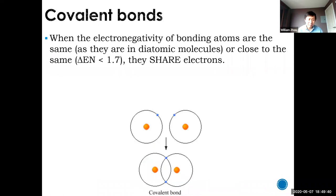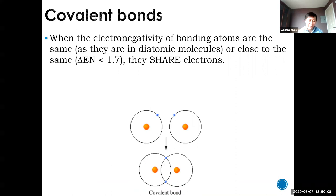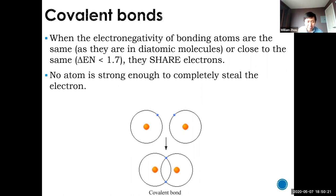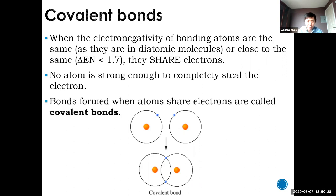With a covalent bond, no one is winning — no one takes those electrons — so the electronegativity difference is small. There's still a difference, but it's not enough for one side to win this tug of war. In grade 10 we teach covalent bonds as 'sharing and caring,' but really, what atoms are trying to do is take electrons from each other — they're just not strong enough. So they're stuck in this tug of war, and electrons get shared between the two atoms.